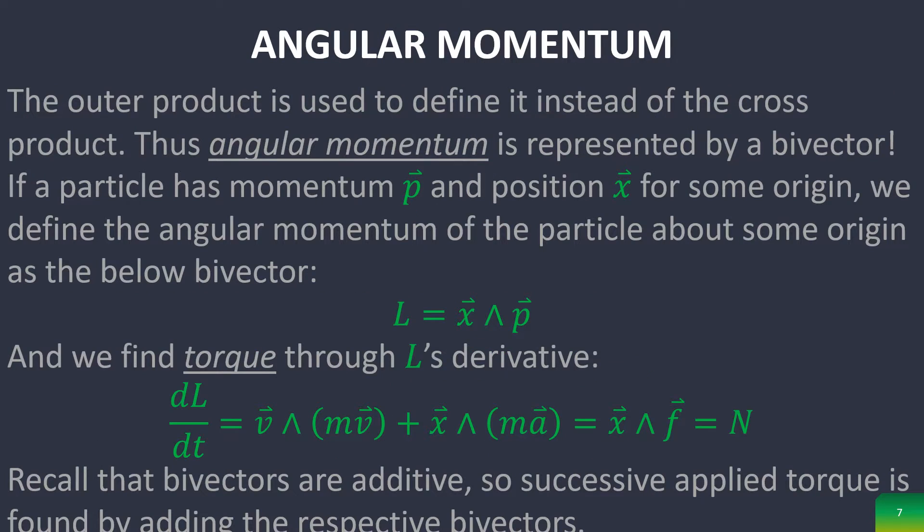Now the outer product is used instead of the cross product to define angular momentum. This allows us to represent it with a bivector, as normally when you represent angular momentum, you use an axial vector. So you have some axial vector, let's say alpha, and then you have the plane of rotation here. This doesn't really give a ton of information regarding what the actual rotation is, and so it's a lot more natural to use the outer product, which gives us an oriented plane that tells us where this rotation is taking place.